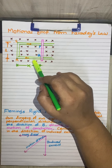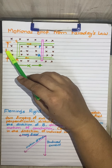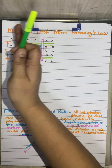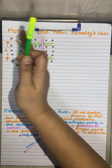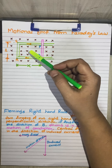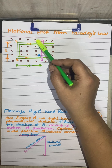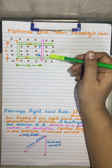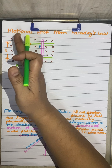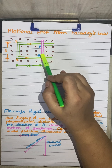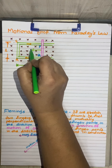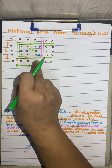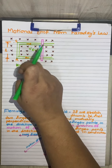In this diagram, we consider conductor PQ of length L, which is free to move on U-shaped conducting rails. This rod PQ is situated in a uniform, time-independent magnetic field B directed normally into the plane, shown by the cross symbol. The conductor PQ is moved inward with speed V. When the conductor slides towards the left, the area of the rectangular loop PQRS goes on decreasing.